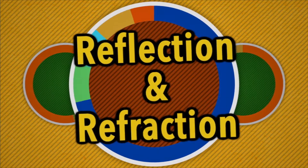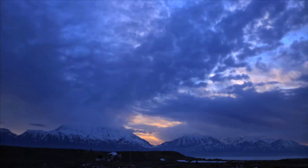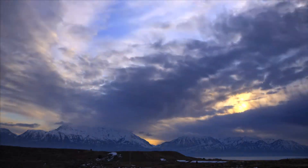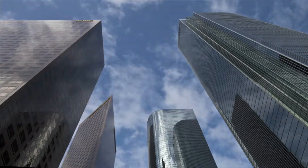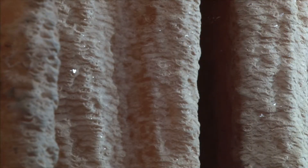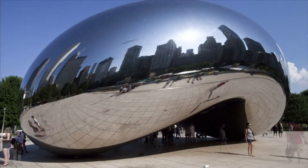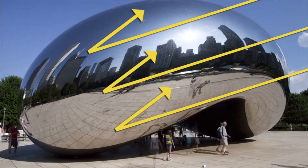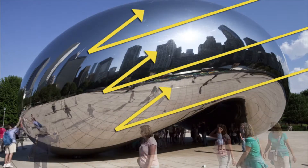Reflection and refraction. The reason you are able to see anything is because light reflects off objects. The way that light will reflect off an object depends on the object's surface. When light rays hit a rough surface, the light scatters in different directions. But when light hits a smooth surface like a mirror, all of the rays go in one direction — the light bounces off and comes right back in one direction.